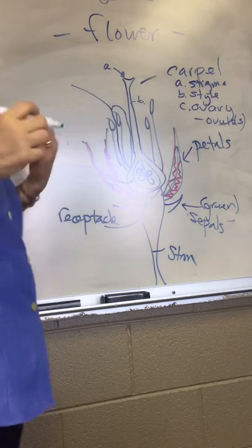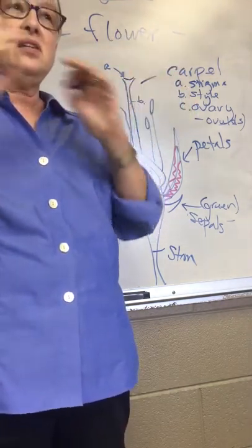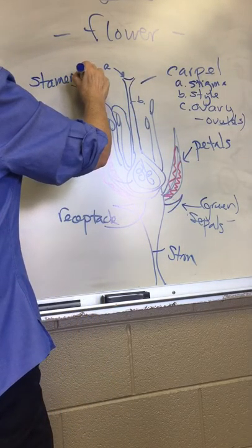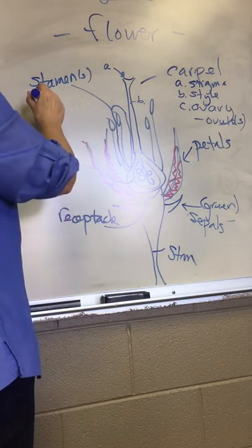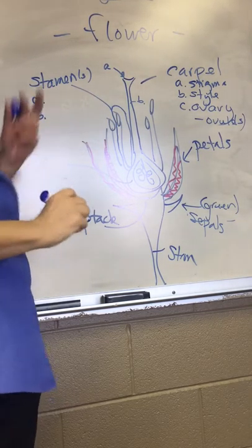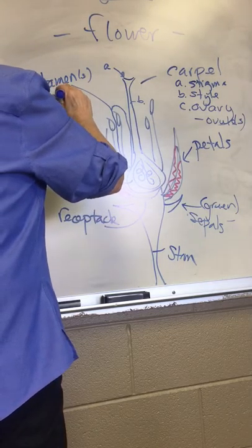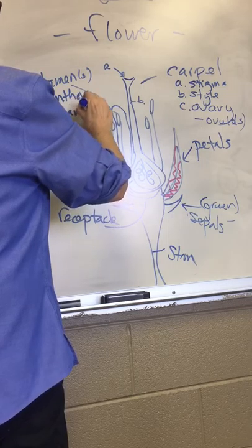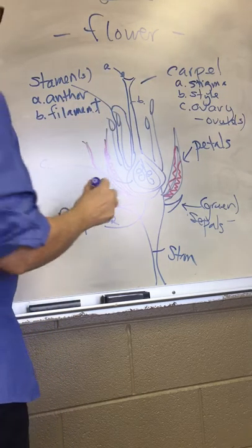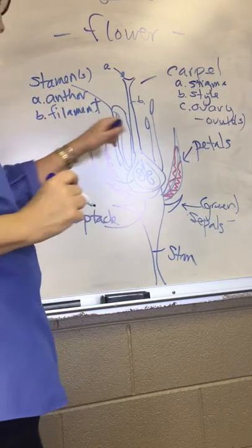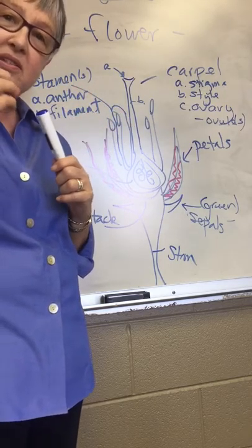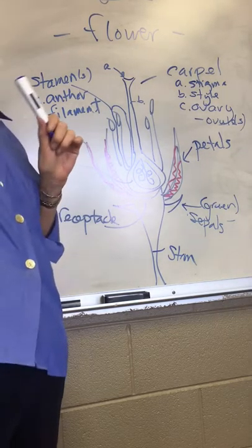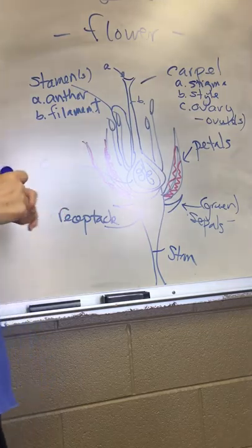So in this diagram, the male parts are located here. We have a name for the entire structure, and those are called stamens. A stamen is composed of two parts: the anthers and the filament. The anther is going to be yellowish; you'll see pollen grains associated with it. The filament is what is going to hold the anther up close to the opening of the flower.